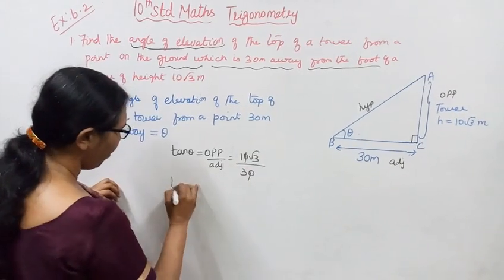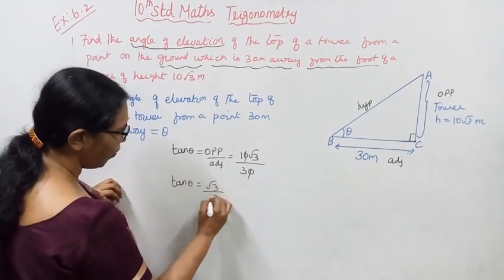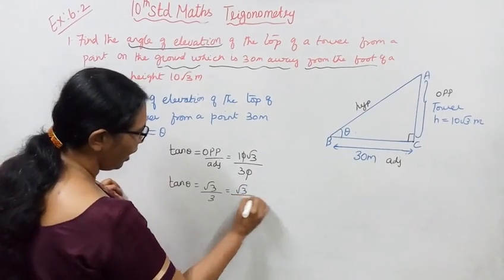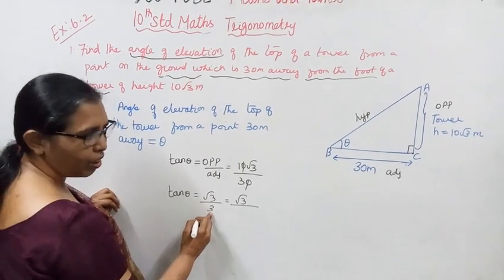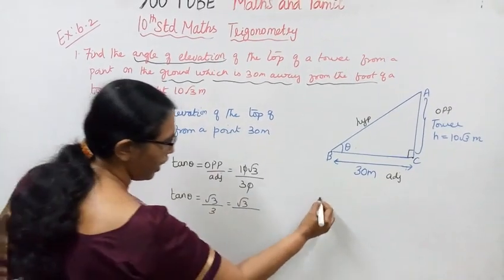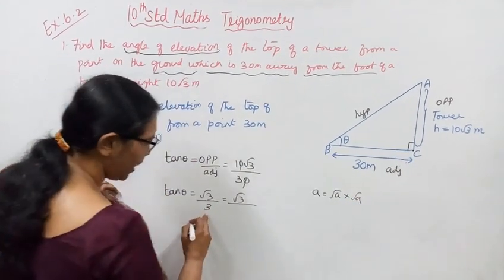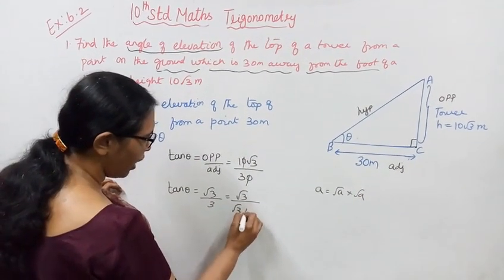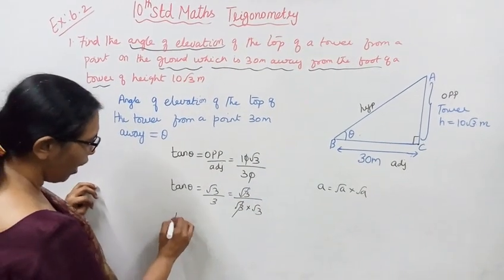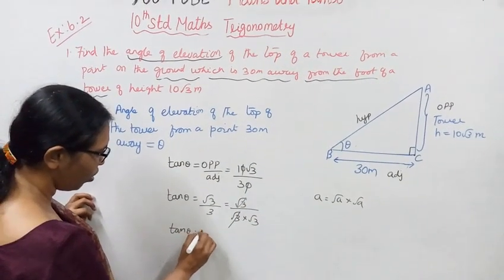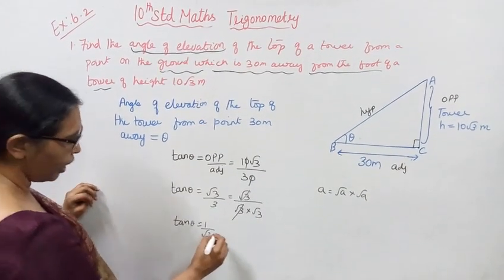We can cancel the 10 and 30 to get tan theta equals root 3 over 3. This simplifies because root 3 times root 3 equals 3, so we get tan theta equals 1 over root 3.